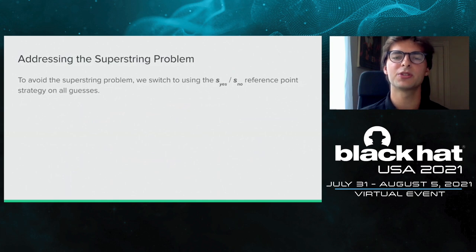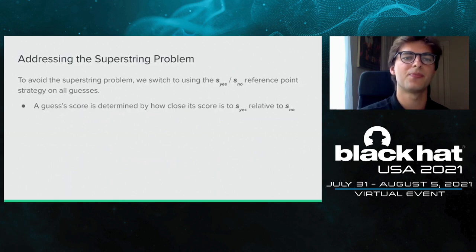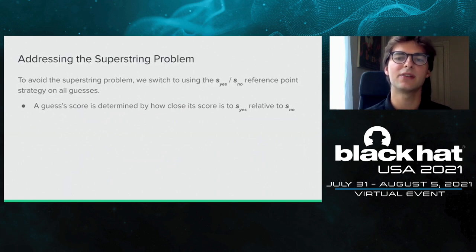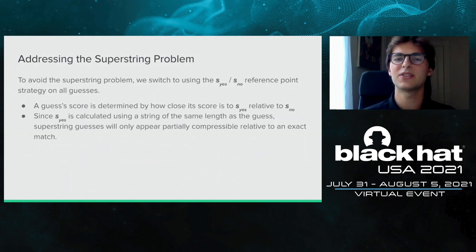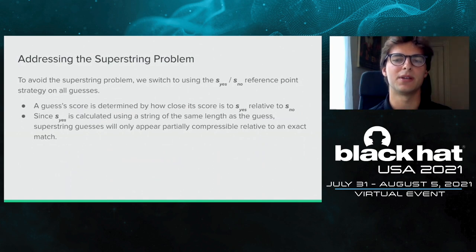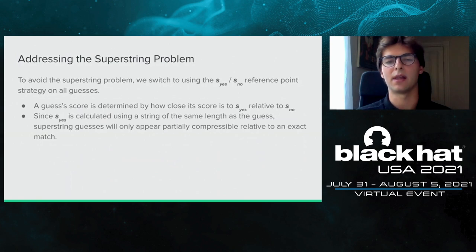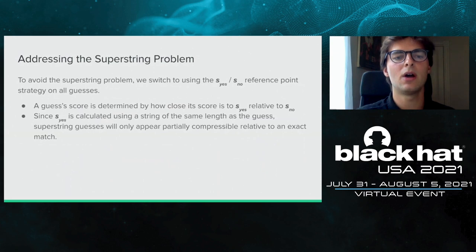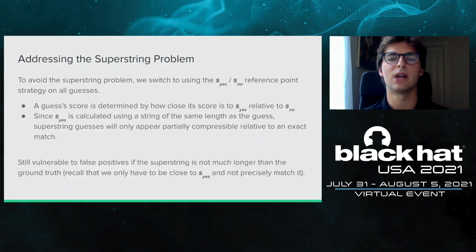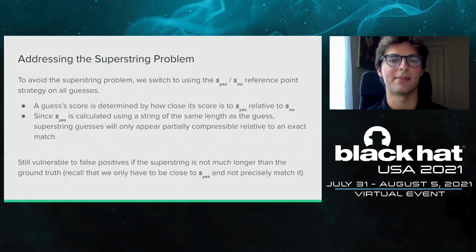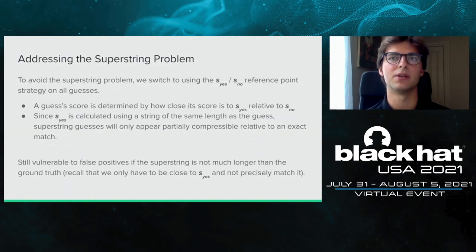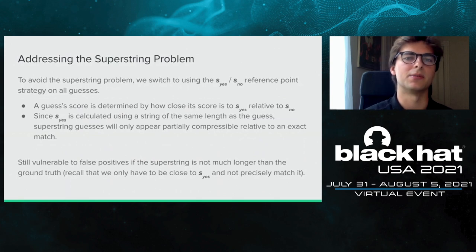To address the superstring problem, we switched to using the S-yes and S-no reference point strategy on all guesses. A guess's score is now determined by how close it is to S-yes relative to S-no. Since S-yes is calculated using a string the same length as the guess, superstring guesses will only appear partially compressible relative to an exact match. However, we're still slightly vulnerable if the superstring is not much longer than the ground truth, and in the character-by-character extraction attack where strings differ by only one character, we sometimes still fall victim to the superstring problem.